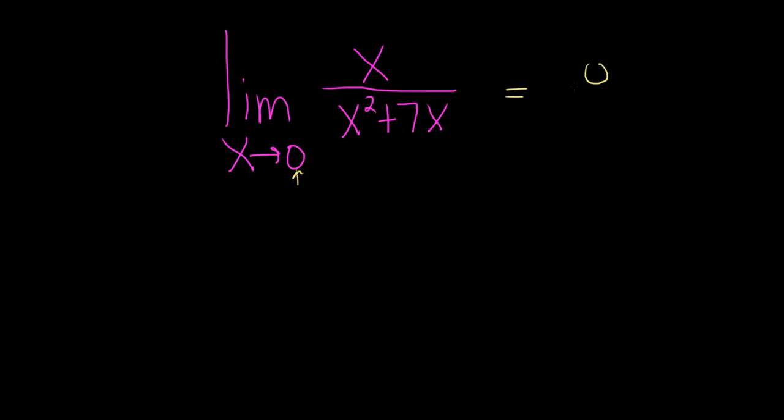If we do that, we get 0 over 0 squared plus 7 times 0. So we end up with 0 over 0, which is undefined. So that's no good. That means we have to try something else.